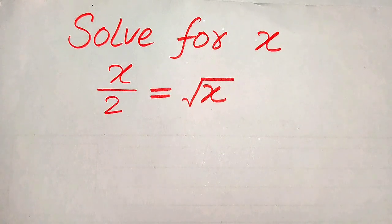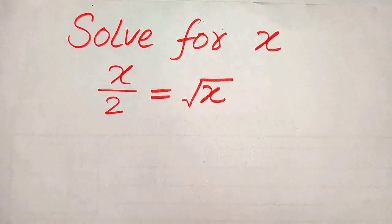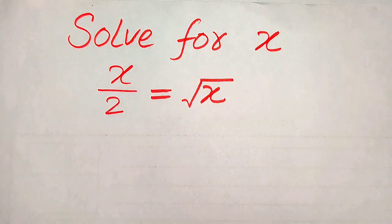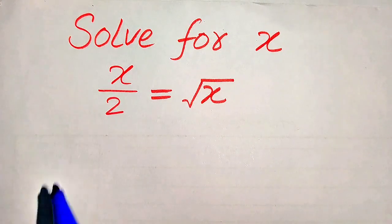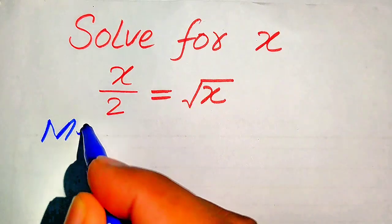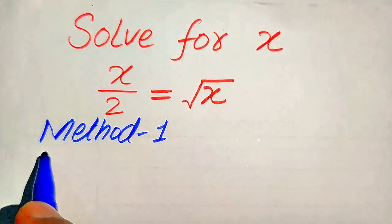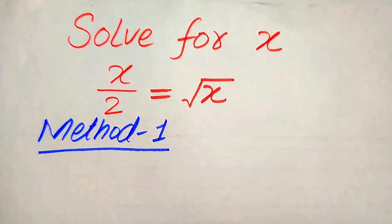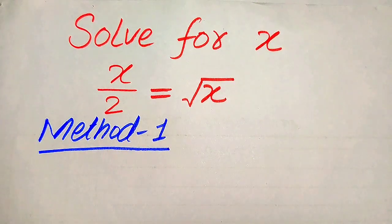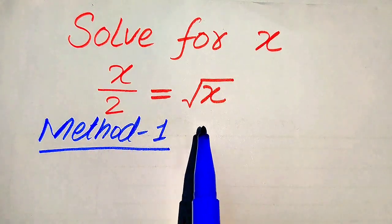Hello everyone. How to solve this problem for the values of x, if we have x over 2 equals the square root of x. We solve this problem for all the values of x, finding all the roots of this equation. We solve this problem using two methods. If you have any other method in mind, please don't hesitate to write it in the comment section. In the first method, we need to eliminate the square root sign from the right hand side.